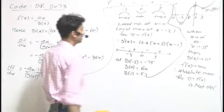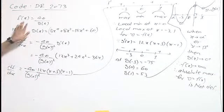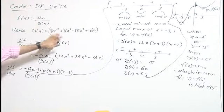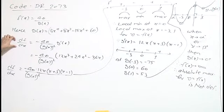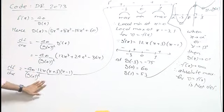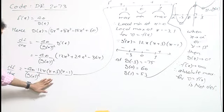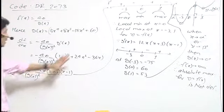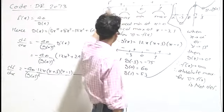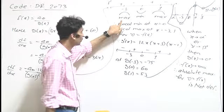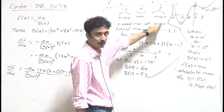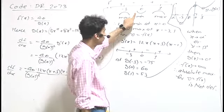To summarize: we have y = f(x) = 40/g(x), where g(x) is the given polynomial. To find maxima and minima of f(x), we differentiate with respect to x, and f'(x) = 0 at x = -3, 0, and 1. From the sign scheme, f(x) has local maxima at x = -3 and x = 1, and local minima at x = 0.